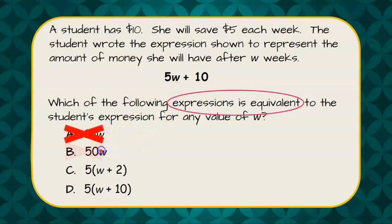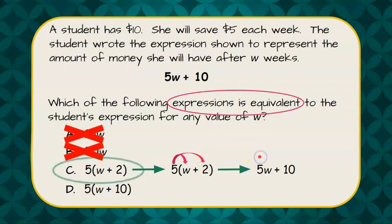Here they multiplied, not true. Here let's distribute and see if we get the same answer. We're going to do 5 times W, which is 5W, and 5 times 2 is 10. And it checks. There you have your answer. Thank you.